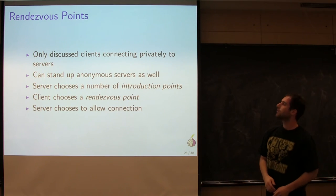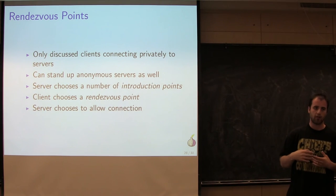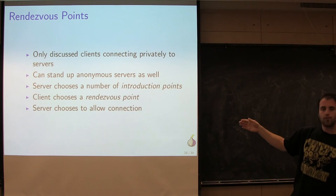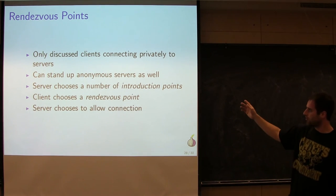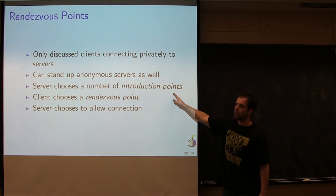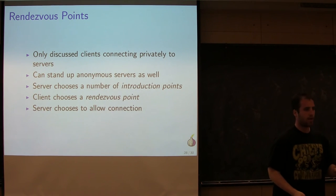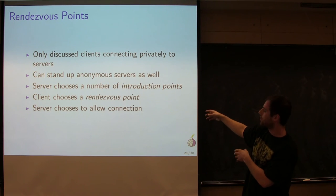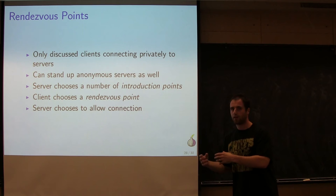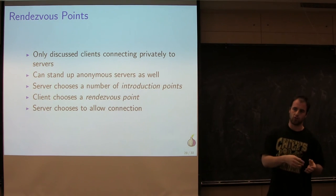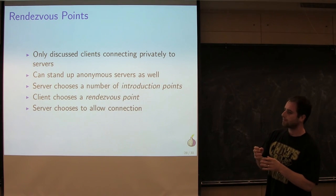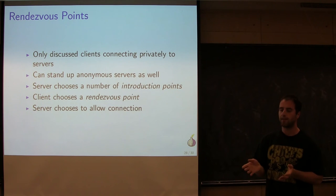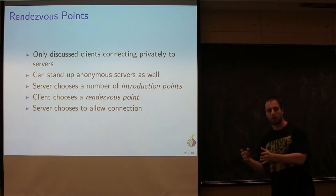Tor also has rendezvous points — a way for you to have a server on the network. You can stand up a server in the network by designating a few onion routers as introduction points, which you advertise somehow — Tor has its own internal DNS. If you want to rendezvous with a server on the network, you choose one of its advertised rendezvous points, the server gets a signal that someone's waiting for a connection, and then the server can choose whether or not to allow the connection.